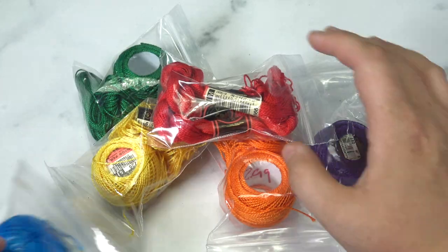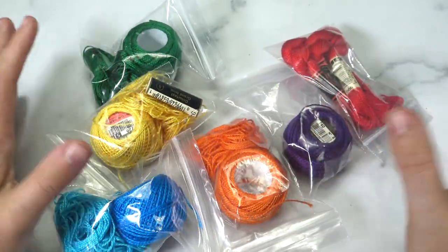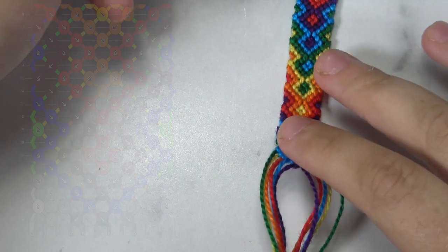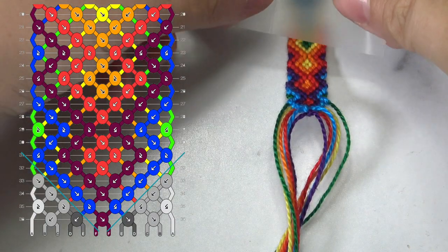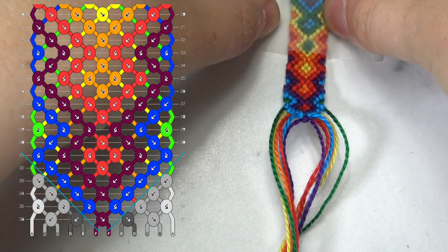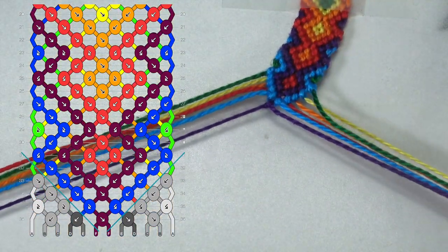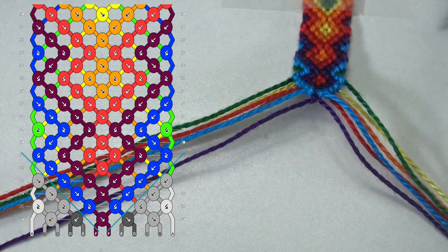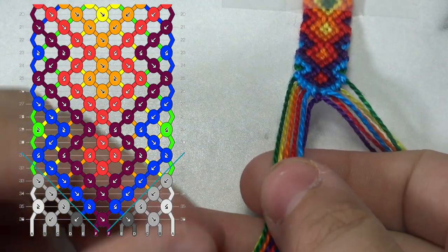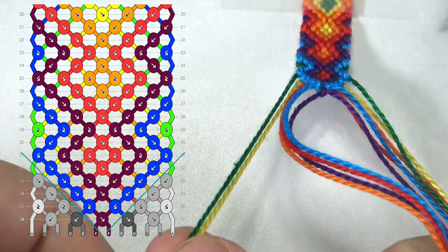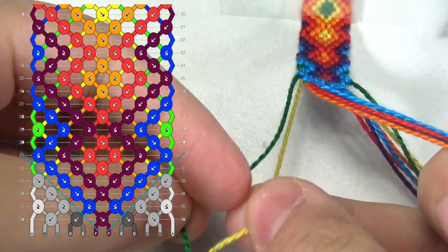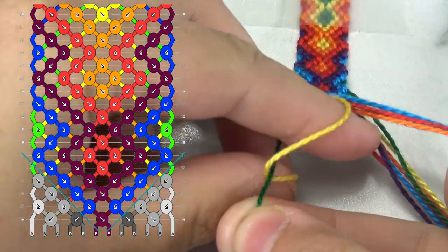For this bracelet I used six colors. Okay, let's go ahead and tape it to the table and separate our two sides. You can see on my image I completed my design up until the blue and purple triangle.